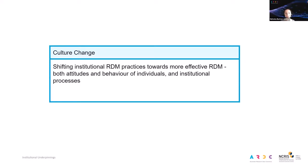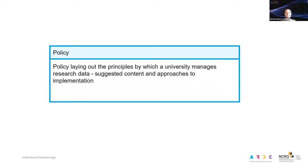Culture change looks at shifting institutional research data management practices towards more effective approaches. This section covers both changes in the attitudes and behaviour of individuals as well as how you shape and guide change in institutional processes. Policy is about the policy that lays out the principles by which a university manages research data. This section looks at suggested content for university policies around research data as well as approaches to implementation of those policies.